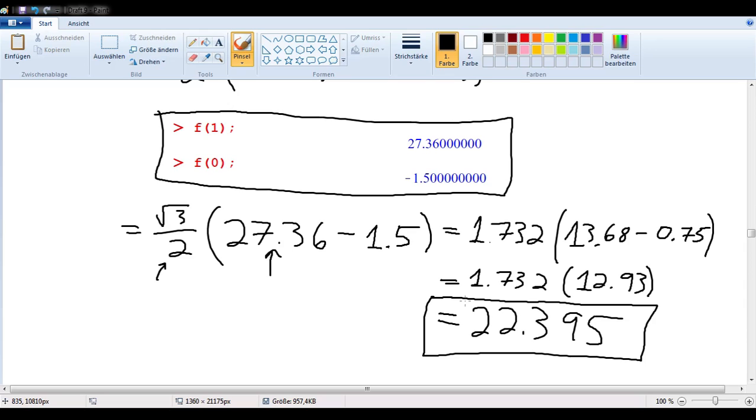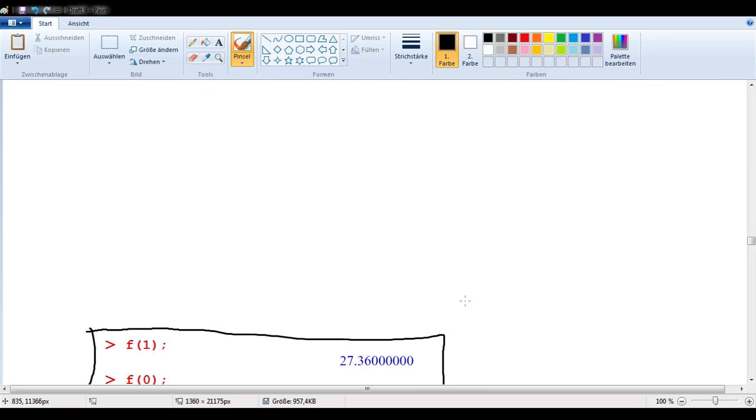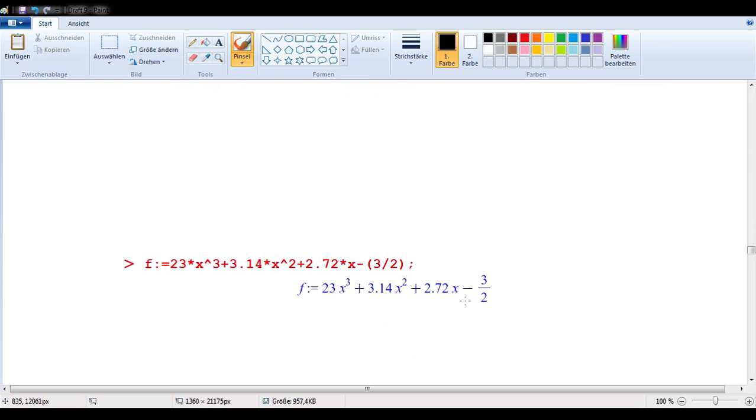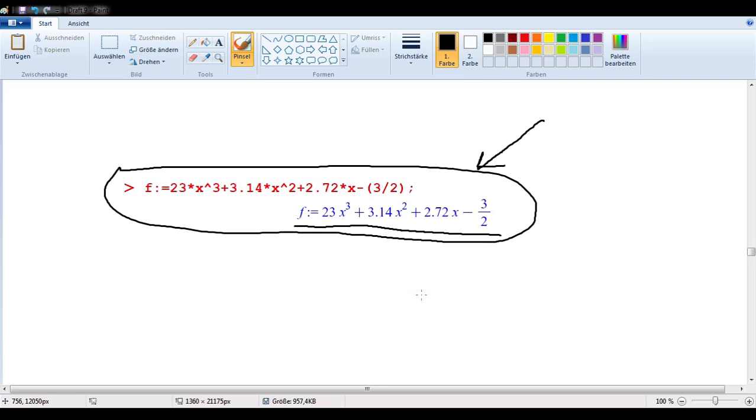So, even you are not sure if I'm right or not. So, you go to your computer program again, and you type your polynomial into it. And, we see that that's what it is. 23 x to the third plus 3.14 x squared plus 2.72 x minus 3 halves. My goodness, that's crazy. You really wanted me to be confused by your craziness. Well, let's see what your computer program says is the actual integral.